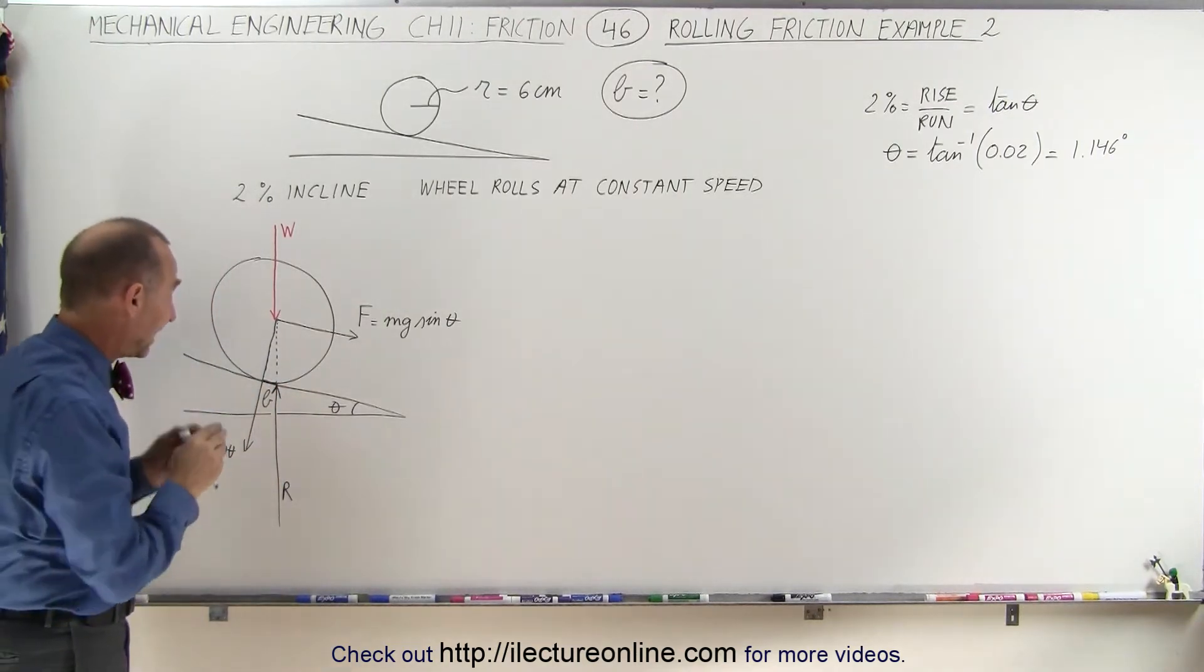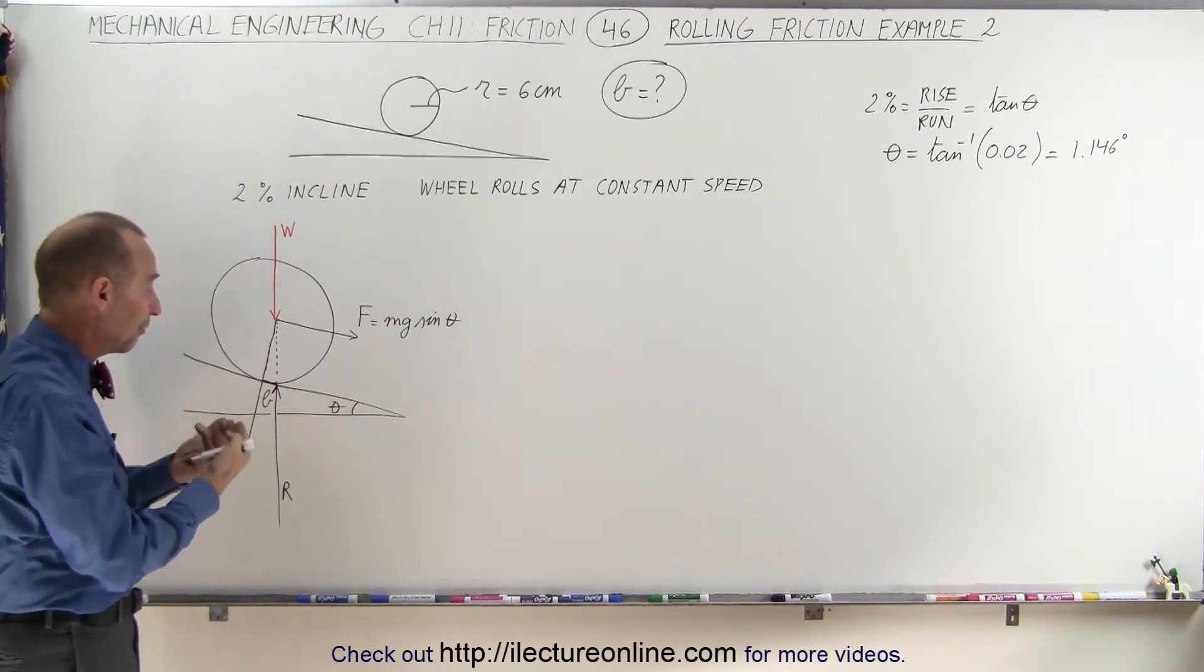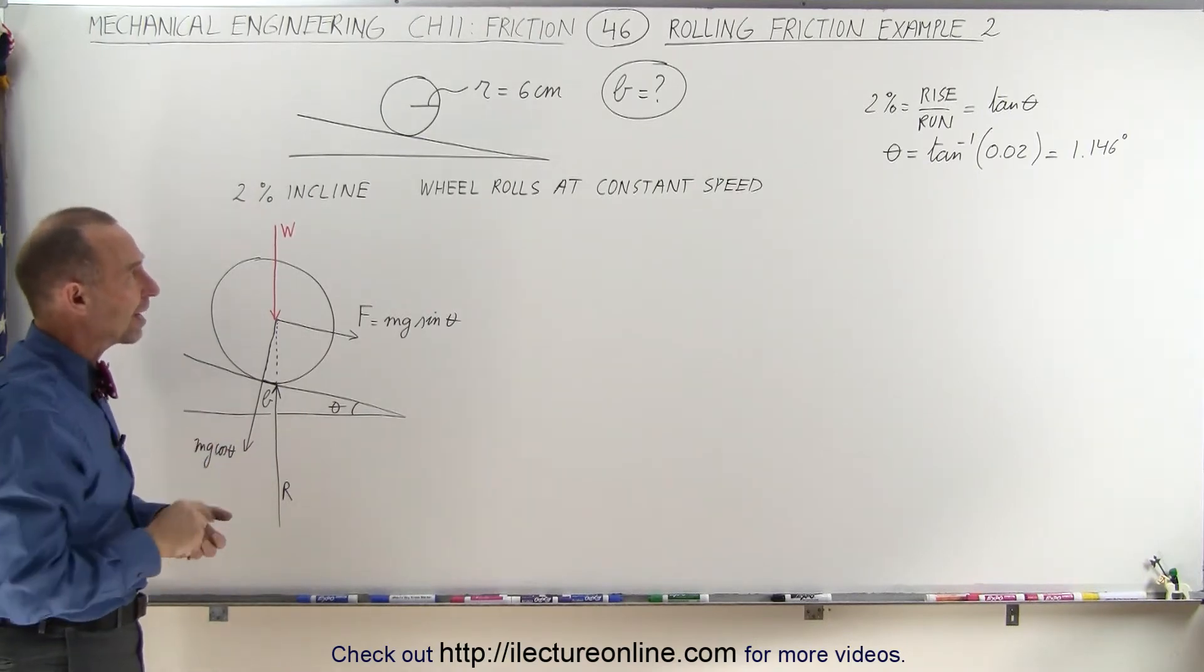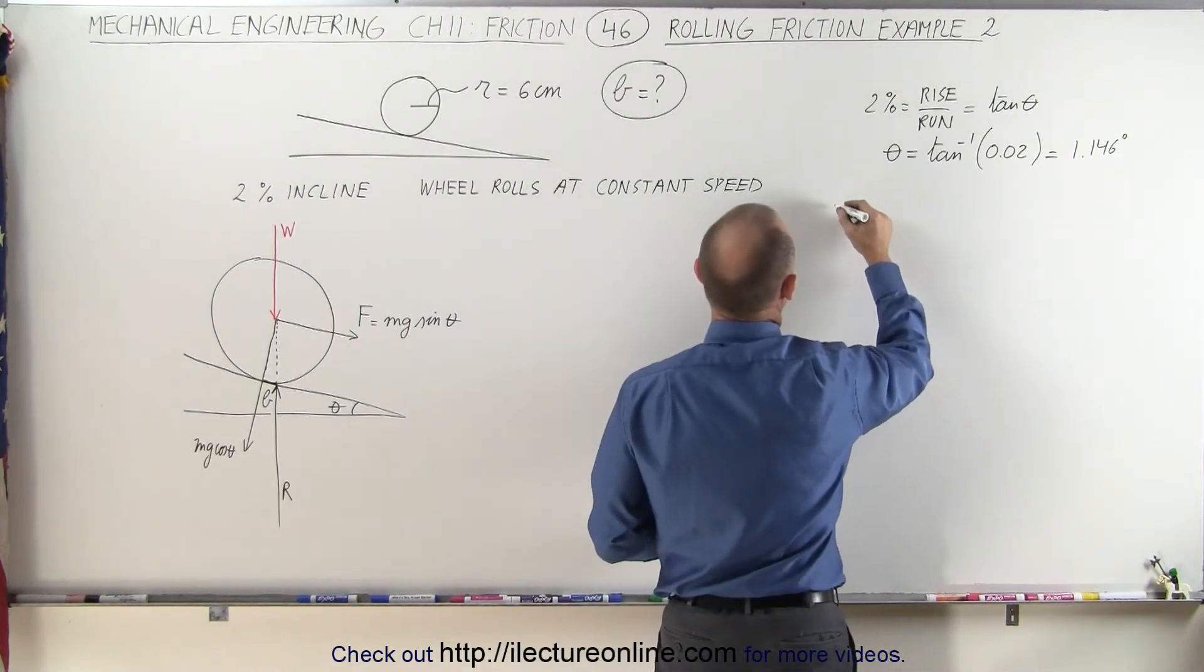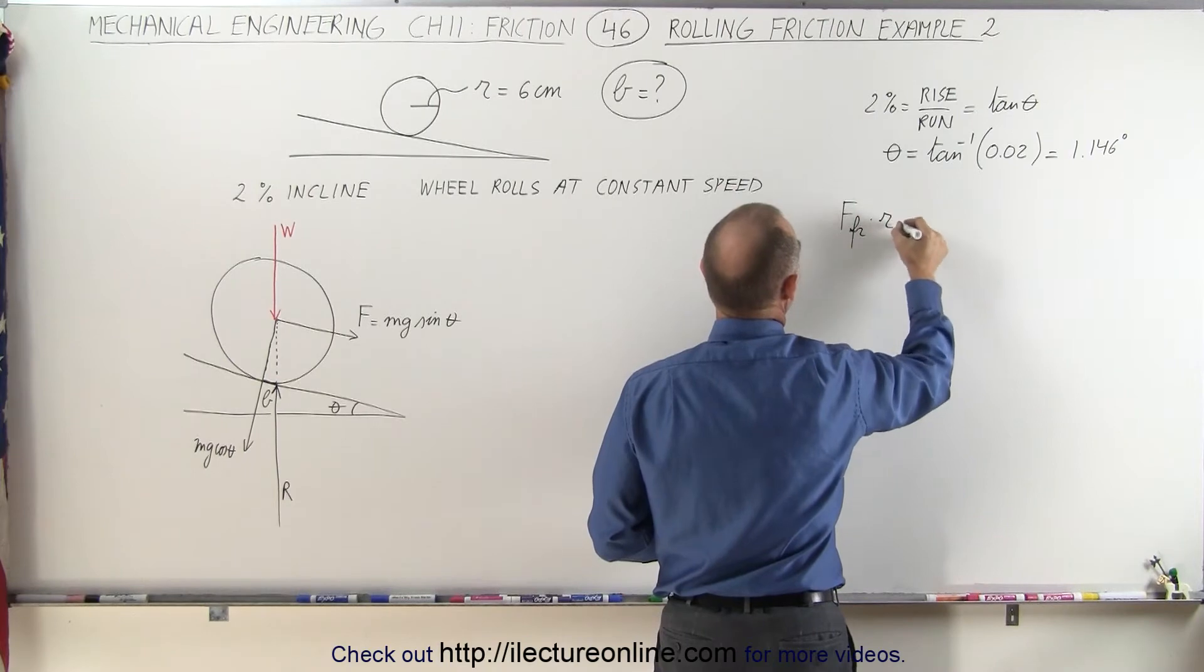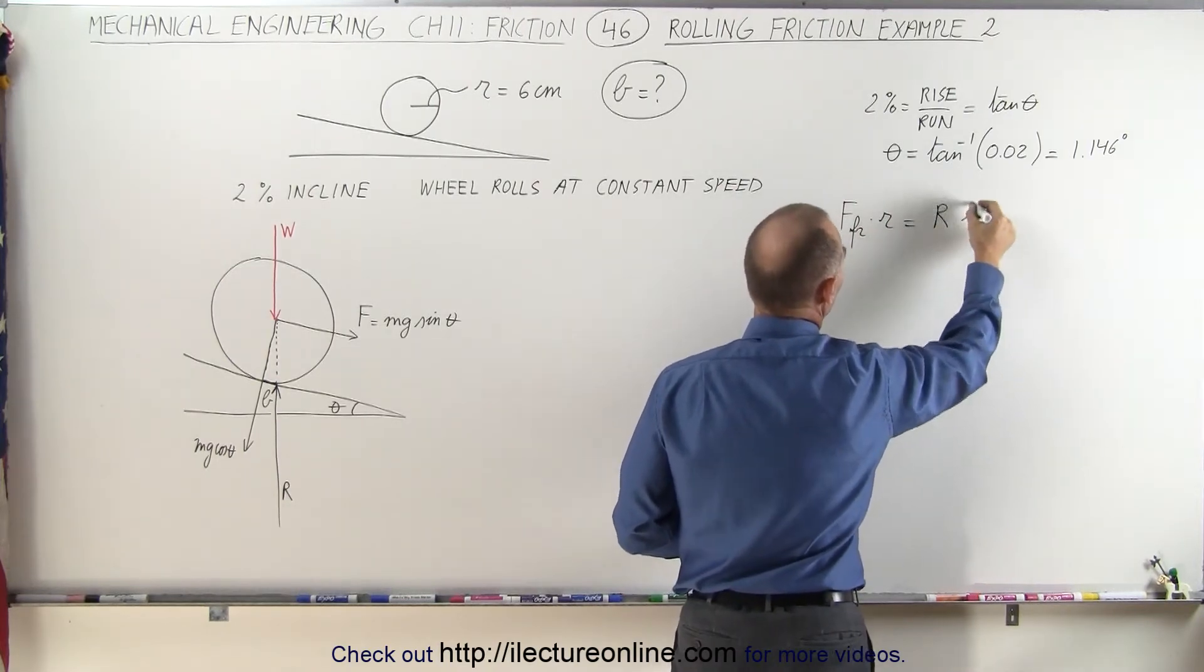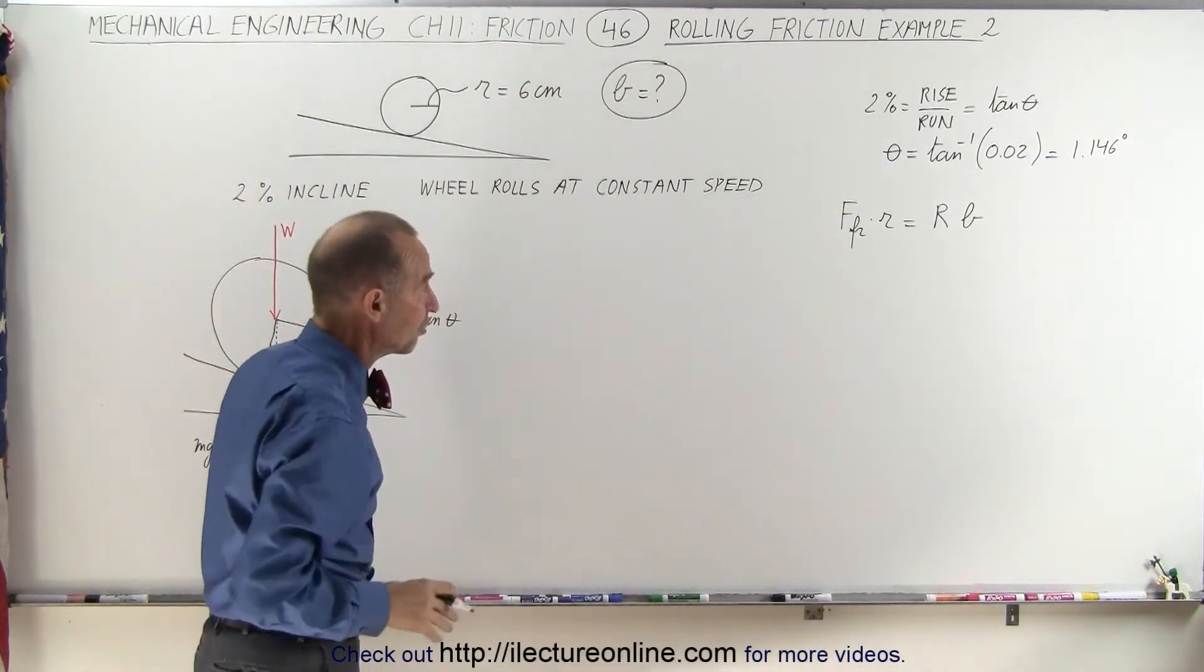The coefficient of rolling friction is indeed a distance with units of meters rather than a coefficient that we normally are used to with no units at all. So we're trying to find B and the equation we're going to use is as follows. We know that the force of friction times the radius of the tire is equal to the reaction force times the coefficient of rolling friction. So that's the equation that we derived a few videos ago.